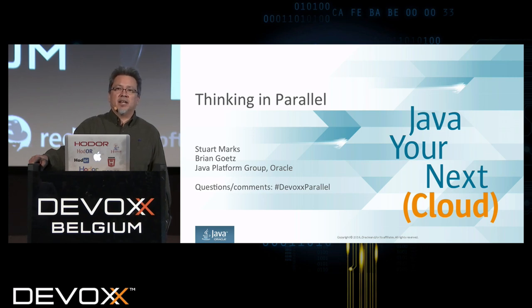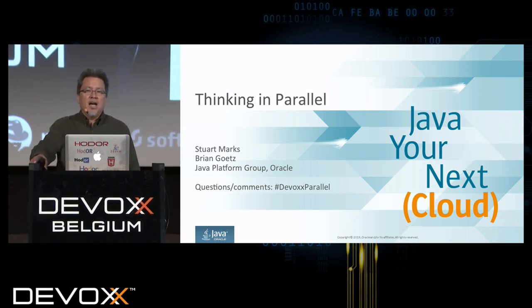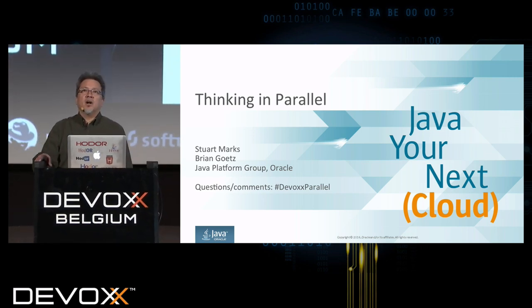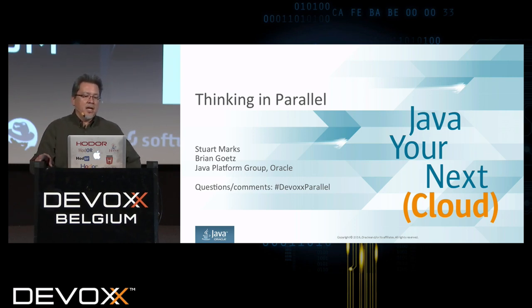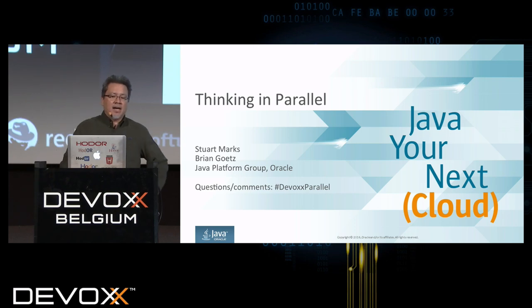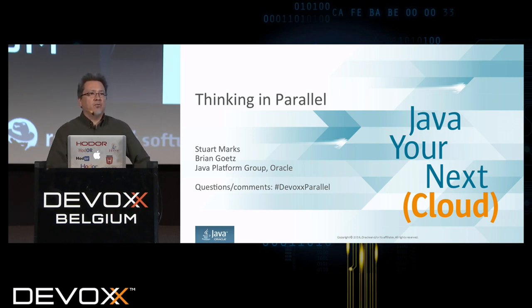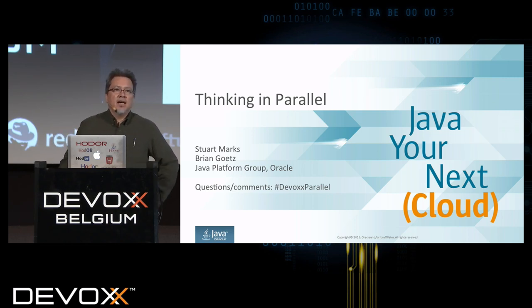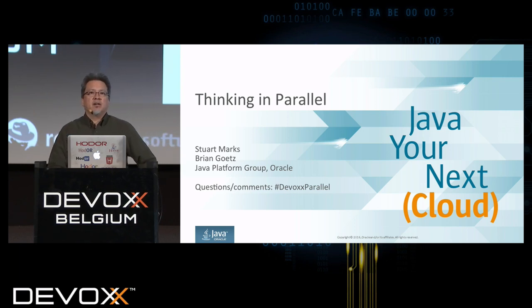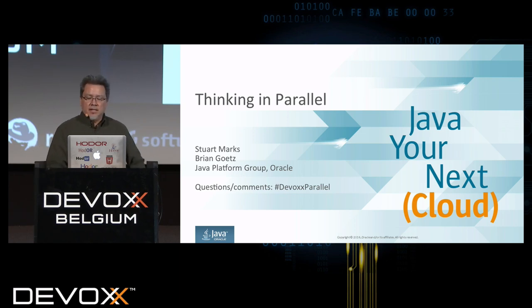My colleague and Java language architect Brian Goetz is here in front. I am going to start off the talk, give the first half of the talk, and then midway through we're going to switch. I have designated a hashtag for questions and comments — it is hash devox parallel — so if you tweet with that hashtag, we will see it. We'll try to follow up afterwards if there are questions not answered in this session.